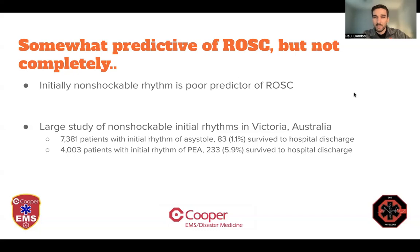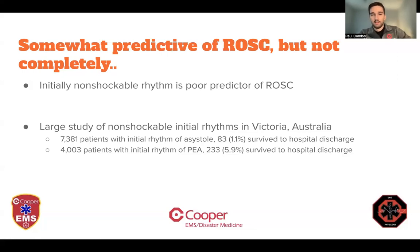There are some factors that are somewhat more predictive of your ability to get ROSC, but not completely. We all know that VT and VF are better rhythms because they're easier to get out of and yield better neurologic outcomes. But it doesn't mean that being in asystole or PEA means you're doomed for death. Having an initial non-shockable rhythm like asystole or PEA is a poor predictor for ROSC, but ROSC still happens. There was a big study from Australia where about 7,300 patients had asystole and 83 survived to hospital discharge — around 1% — and 4,000 patients had PEA and around 6%, or 230, survived to hospital discharge. Those are really small numbers, but the big thing is they're not zero, meaning those patients need to be given the best chance at getting to hospital discharge, which means attempting resuscitation and working the code.